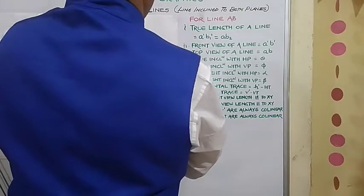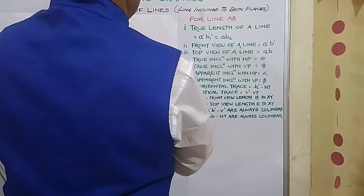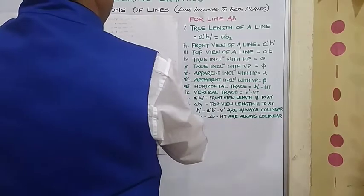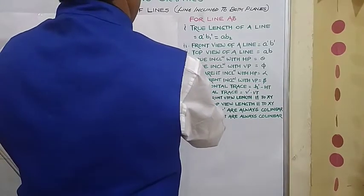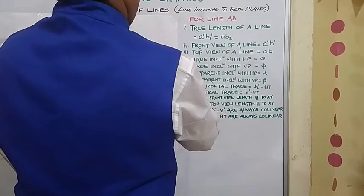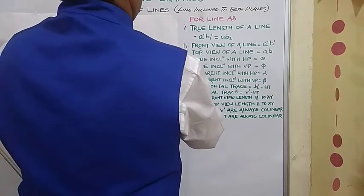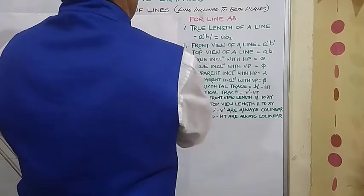Okay. Now we have got A dash. We have got B dash. We have got this particularly B one dash B one. In the same way we can easily locate this A dash. B one dash is there. So we will join A dash B one dash by faint line. Join A dash B one dash by a very faint line. This is the true length of the line. This is the true length of the line.